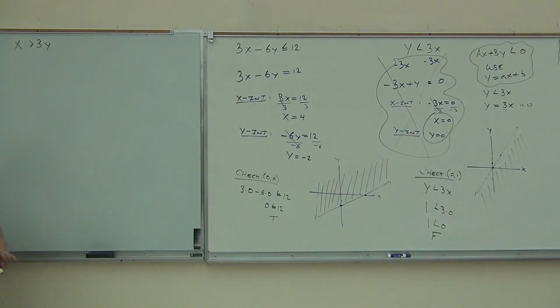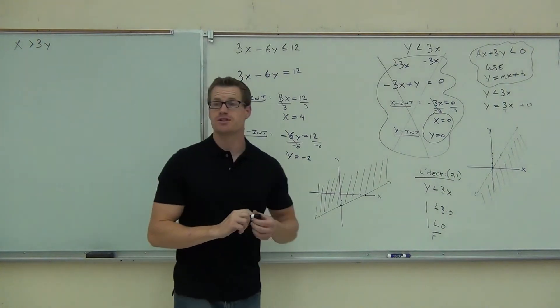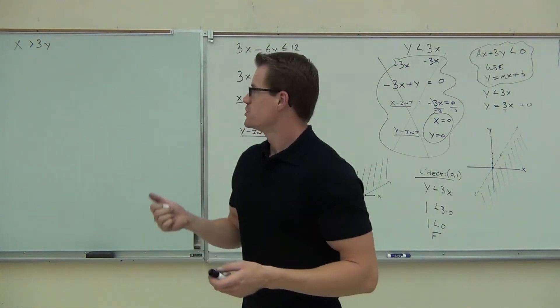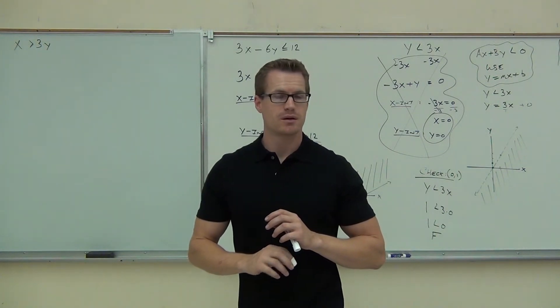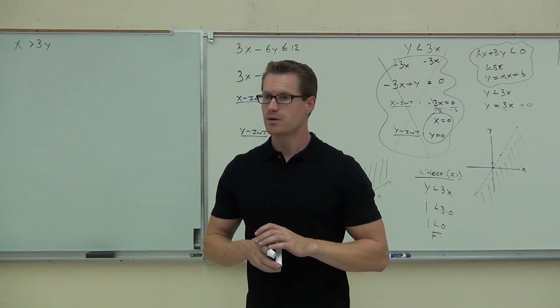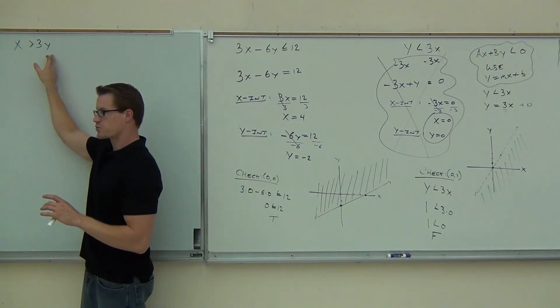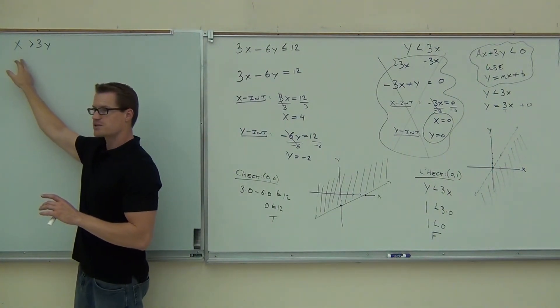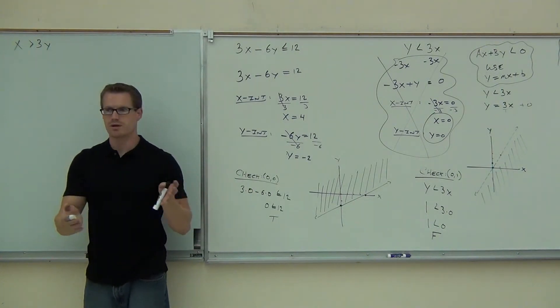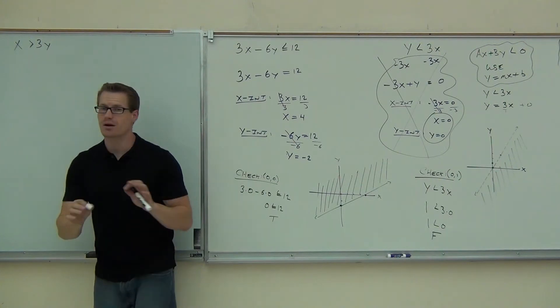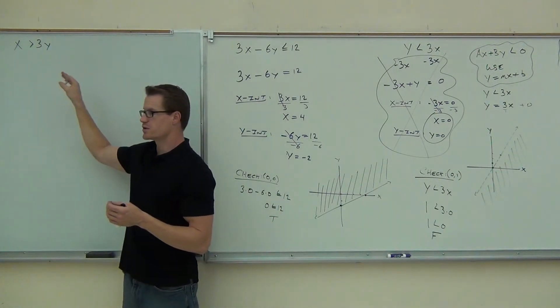x greater than 3y. First thing. Do you think I'm going to be able to use the cover-up method in this example? What do you think? No. Do I have a constant term? So even if I were to get this all to one side, check this out. Even if I were to subtract 3y, I would get x minus 3y is greater than what? Zero. That means if I cover up two things, I would get zero in both of them. This is telling me right here. This is telling me that this line is going to go through the origin. Nod your head with me. For sure. Because both intercepts are at zero. You're going to go through the origin at some point.